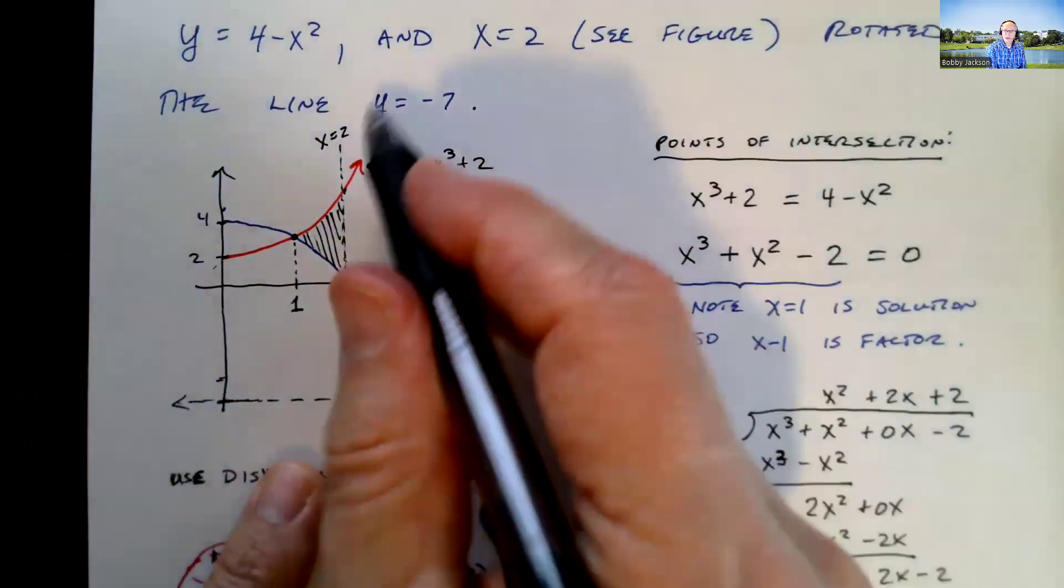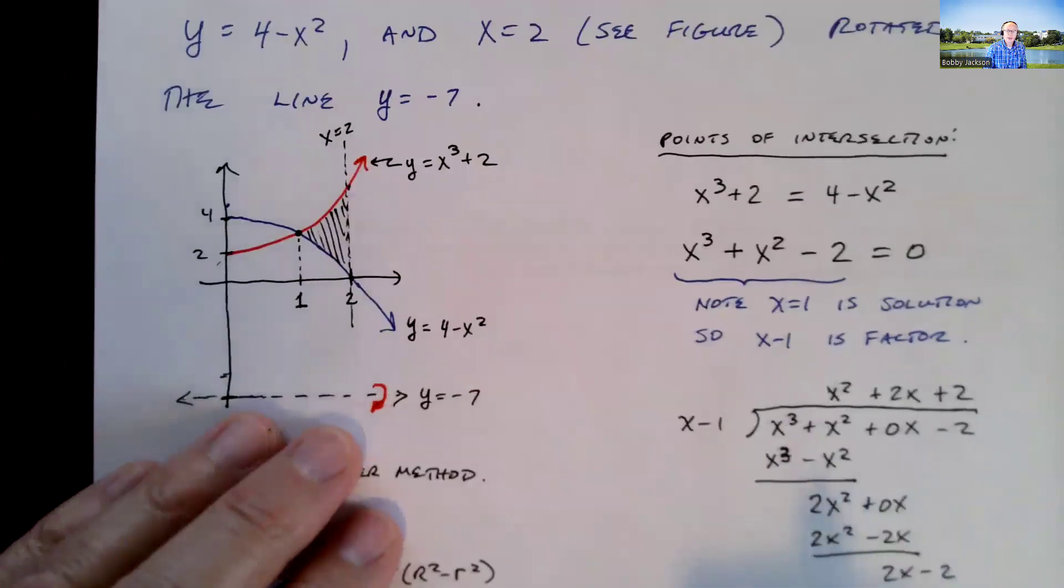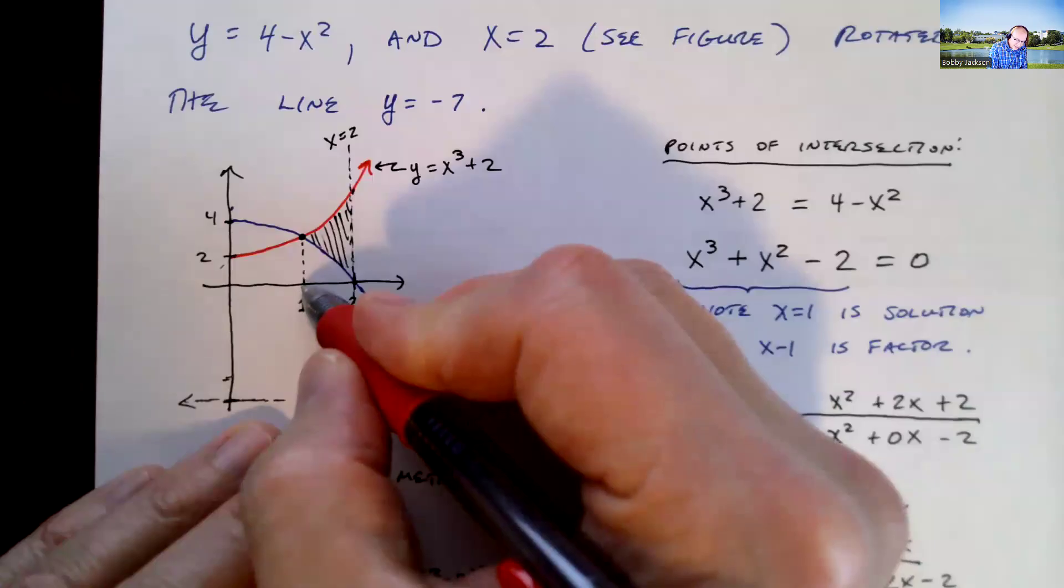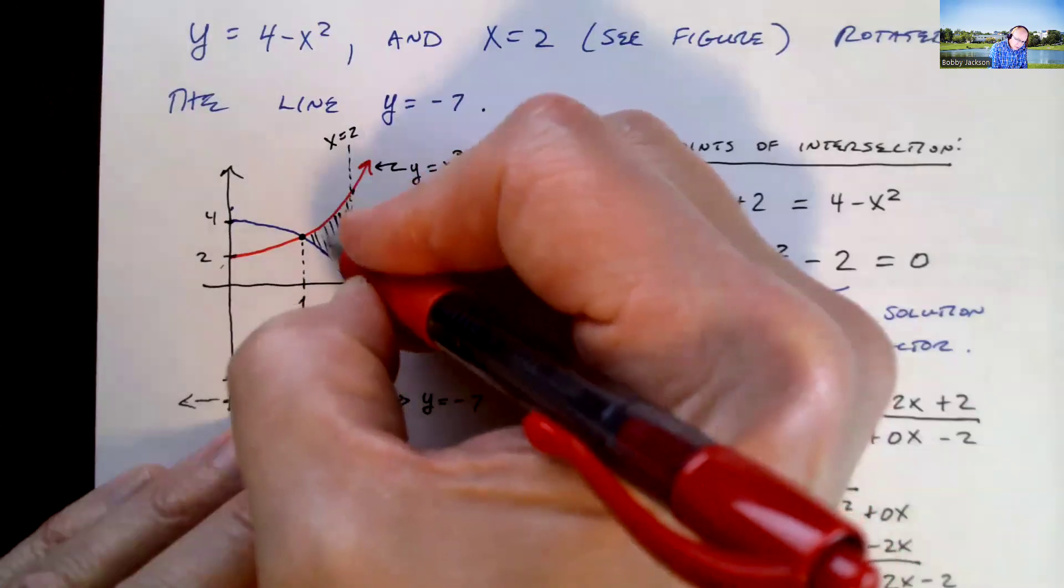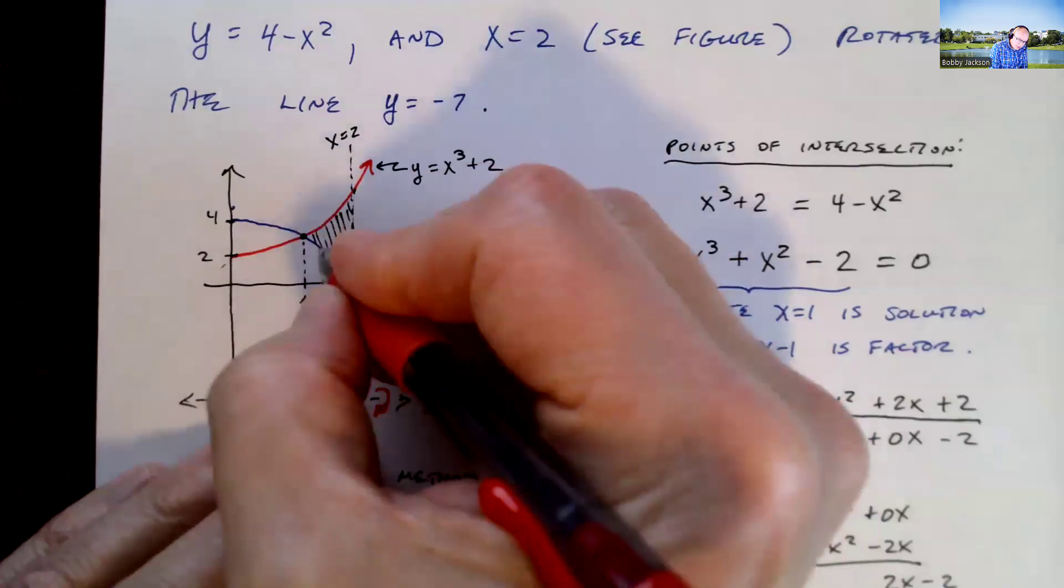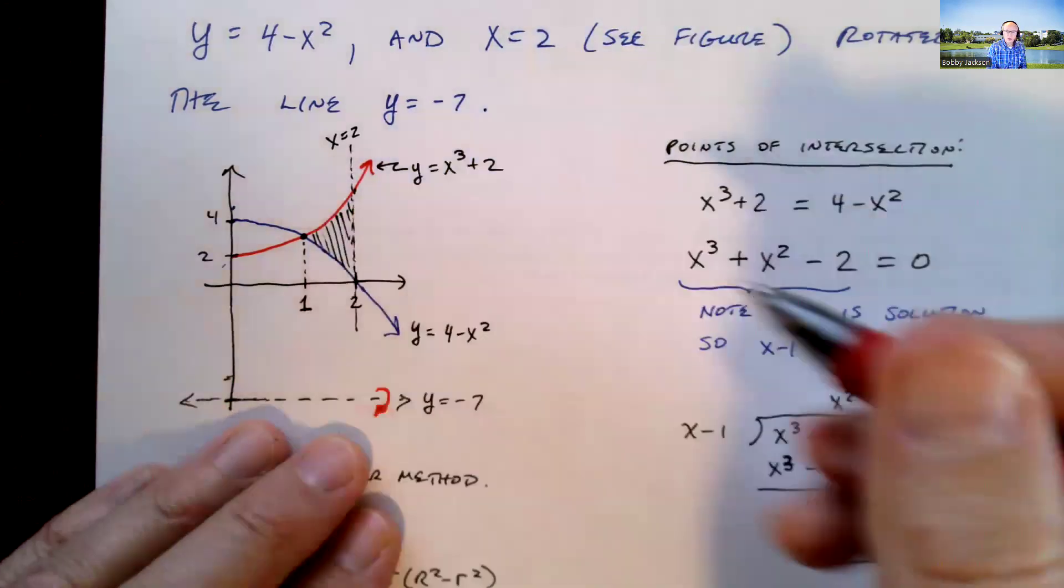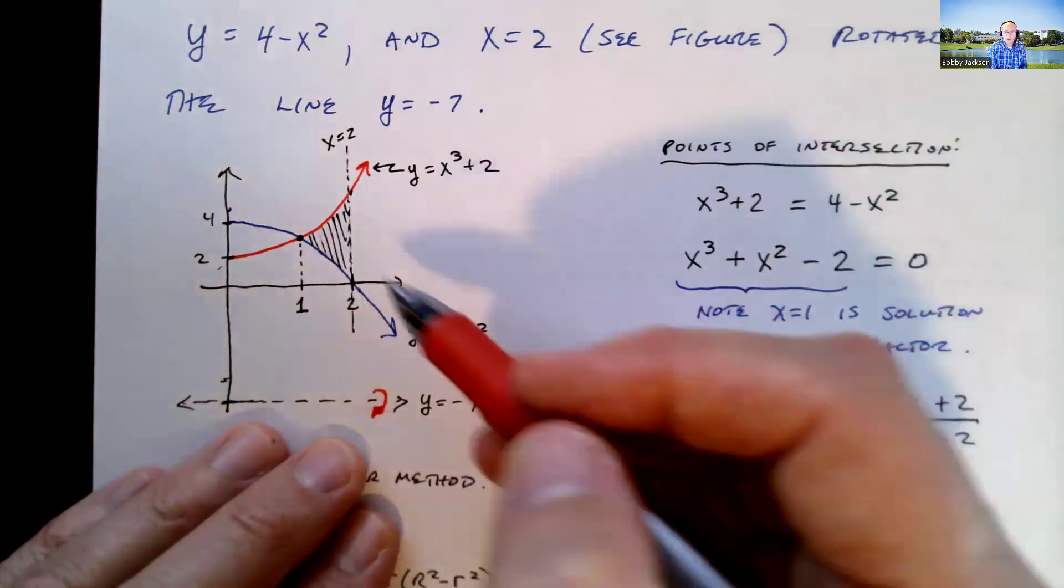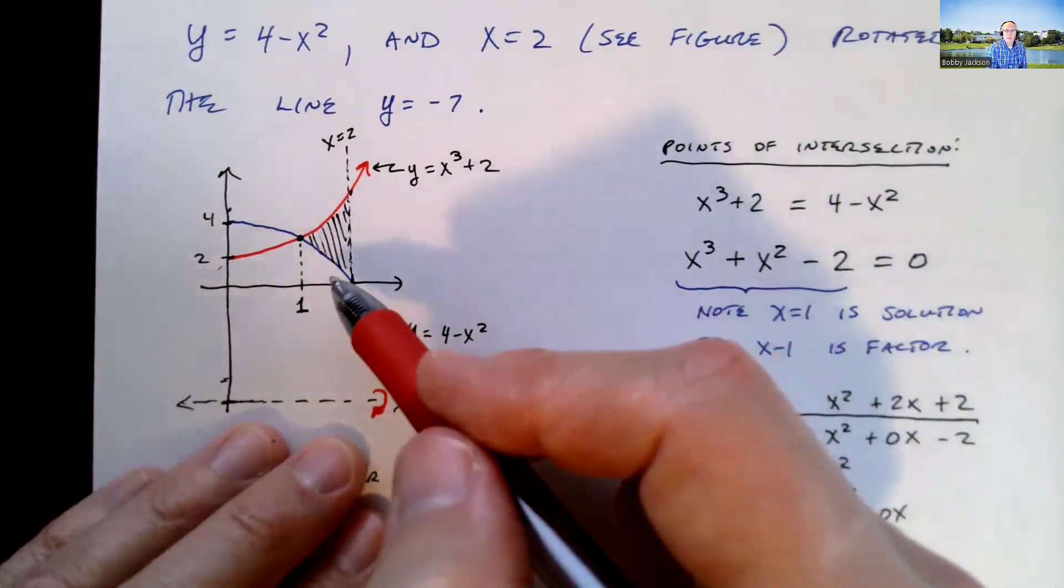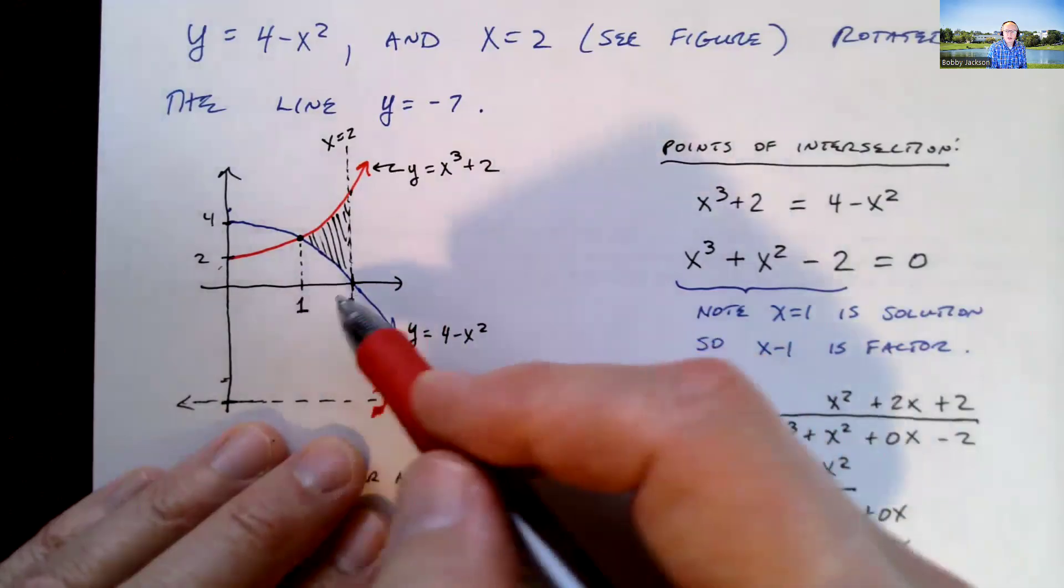So taking that region, and we're going to rotate it about the line y equal negative 7, so way down here. The way I'm going to do this is not to use the shell method, but the disk washer method. And the reason that is, is this region is vertically simple. Any vertical line will have the same top and the same bottom function. If I try and use the shell method, I would be integrating with respect to y. And notice it's not horizontally simple because horizontal lines here have the blue curve and x equal 2 as boundaries, and then up here, red curve and x equal 2 as the boundary.